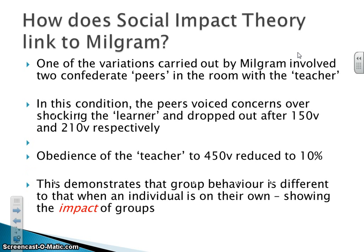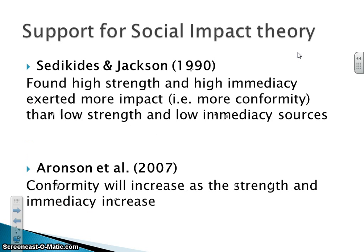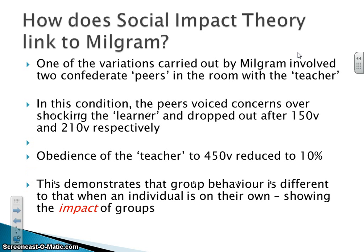A couple of studies support Social Impact Theory. In relation to obedience, particularly Milgram's experiment, in one variation there were two confederate peers in the room with the teacher, and in this condition they refused to continue. Because of that, obedience dropped from 65% to 10%. This shows that when other individuals have an impact on your behaviour, it significantly changes your actions compared to when you are on your own.